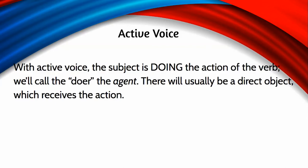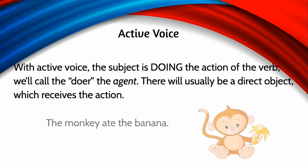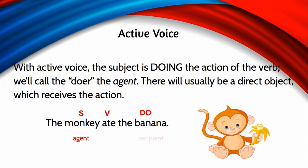With active voice, the subject is doing or performing the action of the verb. We're going to refer to that doer as the agent — this is helpful because 'subject' has more to do with the part of the sentence, whereas 'agent' is the thing performing the action. There will usually be a direct object receiving the action. For example: 'The monkey ate the banana.' Monkey is the subject and also the agent; banana is the direct object receiving the action.